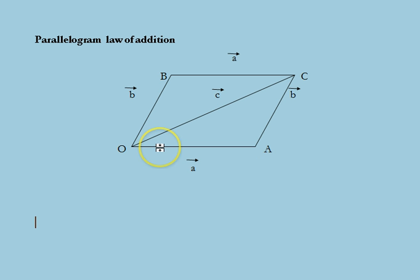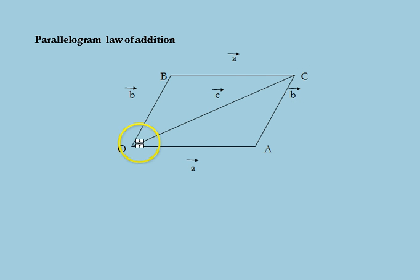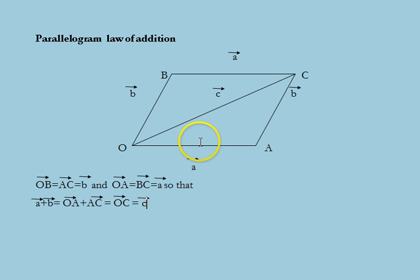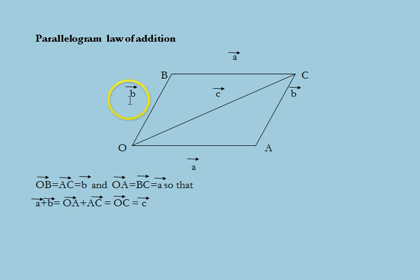Next is the parallelogram law of vector addition. Consider a parallelogram where vector OB equals vector AC equals vector B, and vector OA equals vector A equals vector BC, so that vector A plus vector B equals vector C. Then vector OA plus vector OB equals vector A plus vector B equals vector C, which is vector OC. Thus if two vectors A and B are represented by two adjacent sides of a parallelogram, their sum C is represented as the diagonal of the parallelogram co-initial with the given vectors.